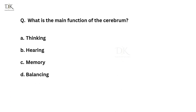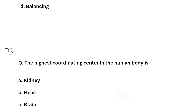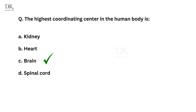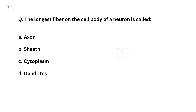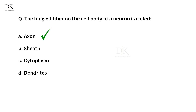What is the main function of the cerebrum? The right answer is thinking. The highest coordinating center in the human body is? The right answer is brain. The longest fiber on the cell body of a neuron is called? The right answer is axon.